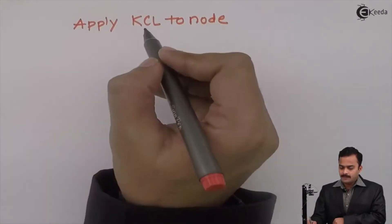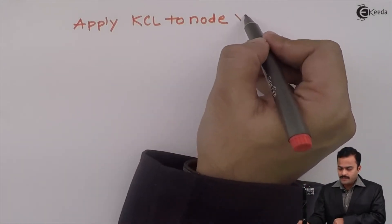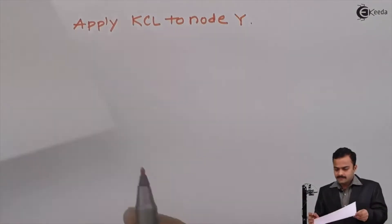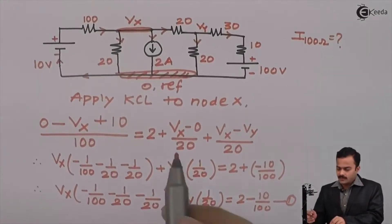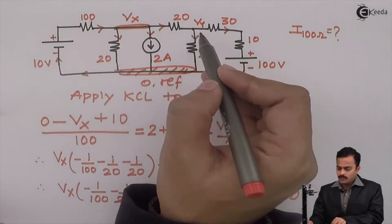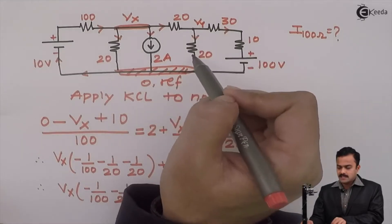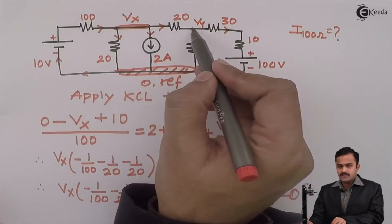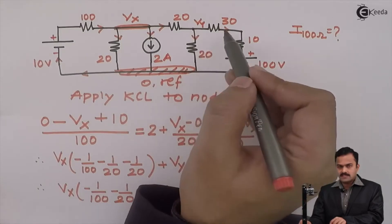Similarly, I can apply KCL to node Y. Let's check the circuit once again. For Y node, I am having 3 branches. One branch will be incoming and 2 branches are outgoing.